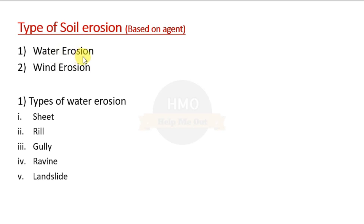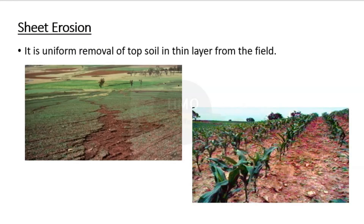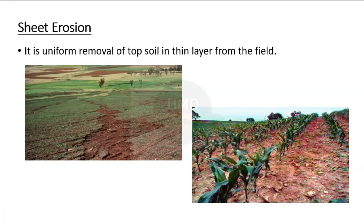Based on the agent, there are two types of soil erosion: water erosion and wind erosion. Water erosion refers to the movement of water along with soil. There are five types or stages of water erosion. The first is sheet erosion, also known as the initial stage. When rainfall occurs, raindrops churn the topsoil and along with runoff the muddy water moves away — it is a uniform removal of topsoil in a thin layer from the field.